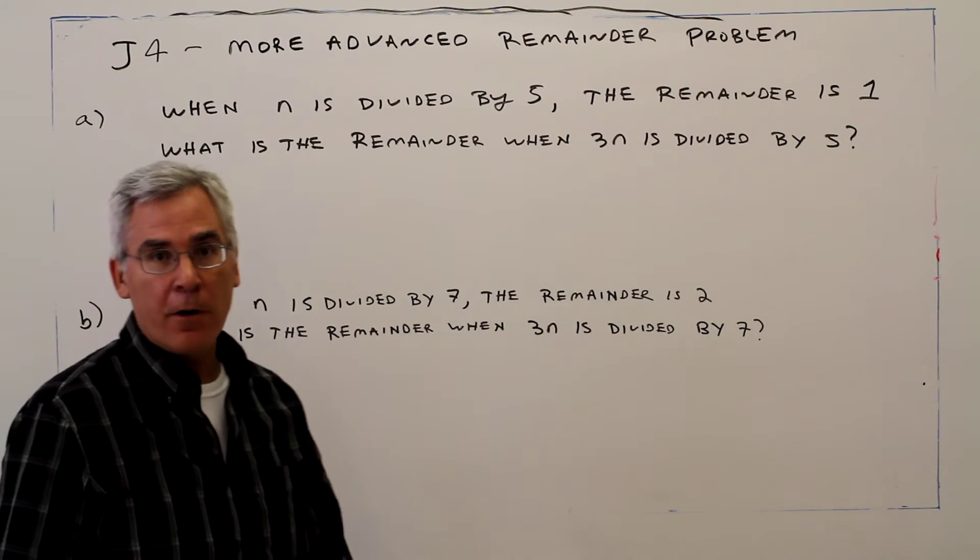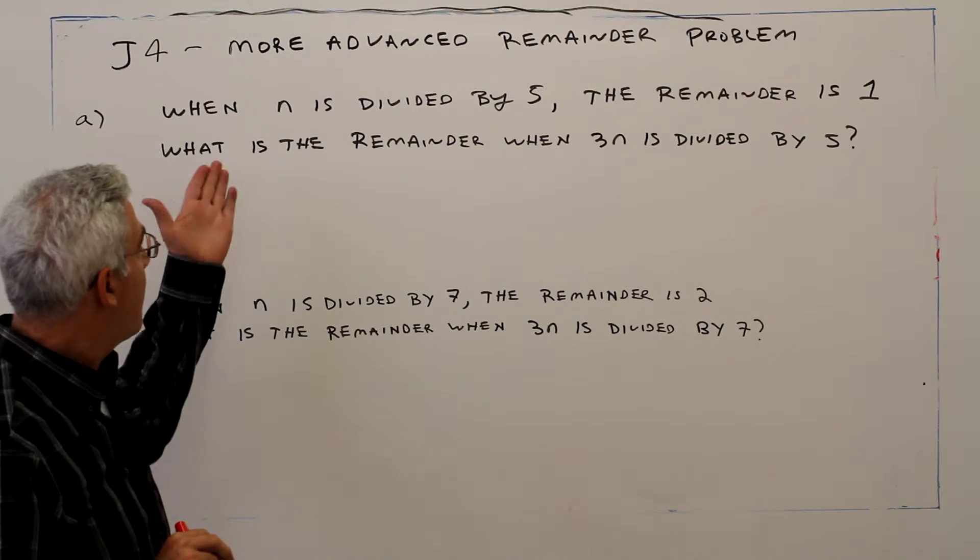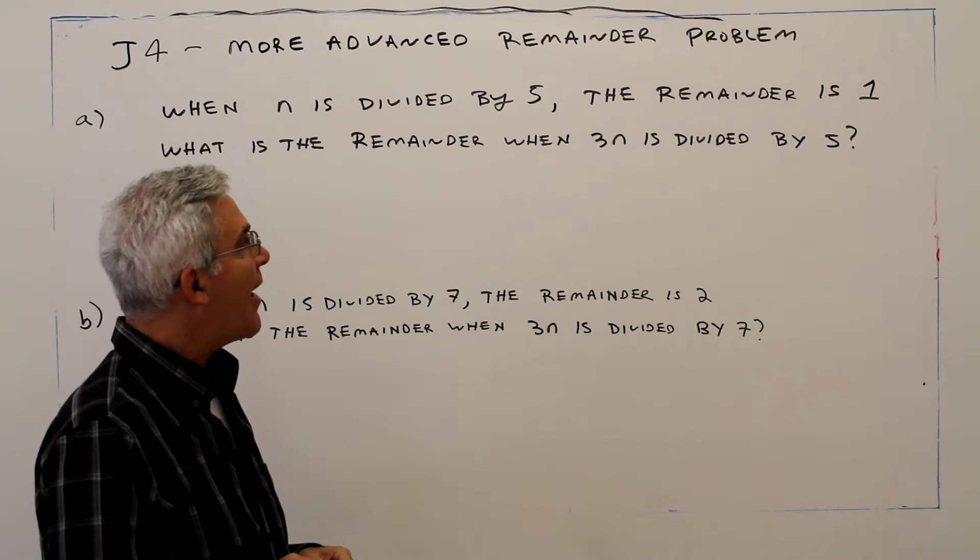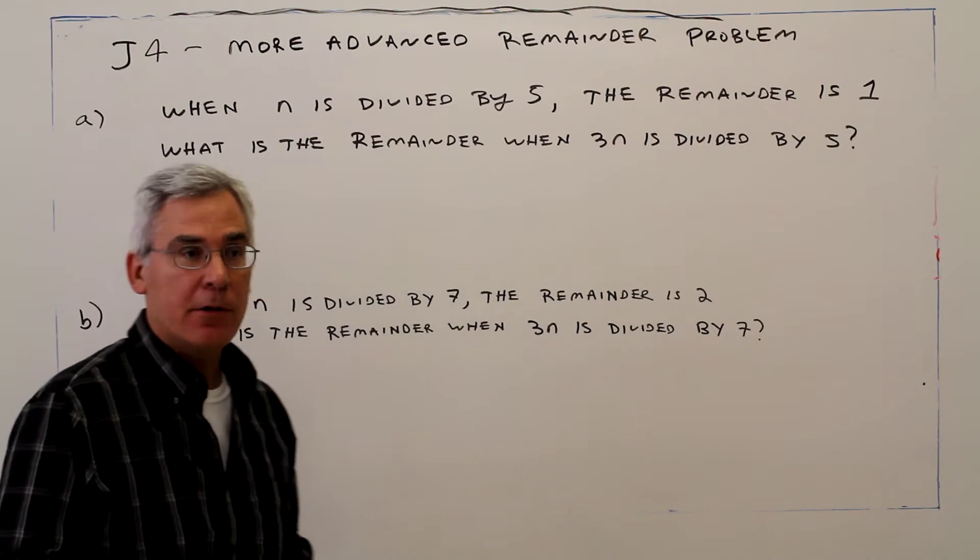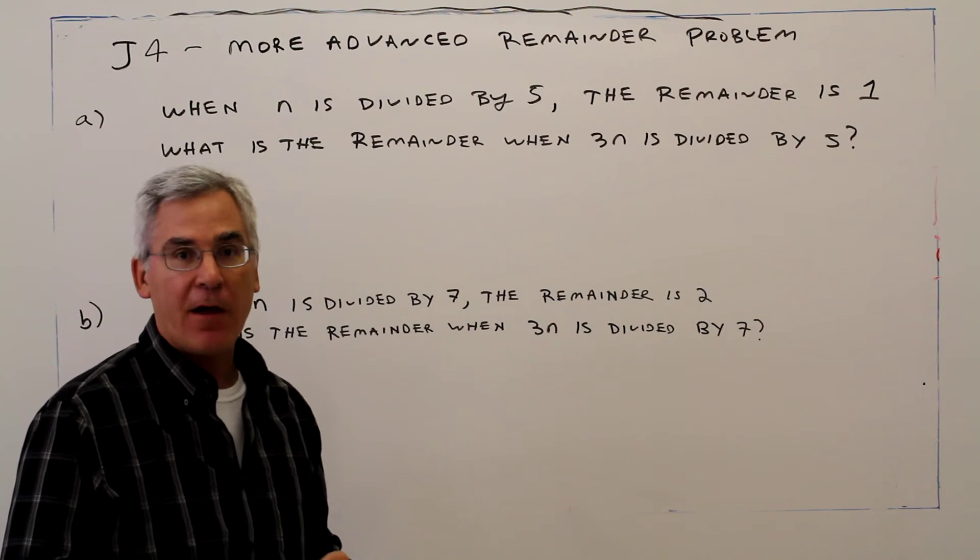Welcome to video J4. There are two problems, more advanced remainder problems, part A and part B. Part A: When n is divided by 5, the remainder is 1. What is the remainder when 3n is divided by 5?